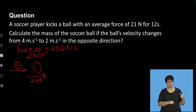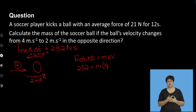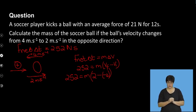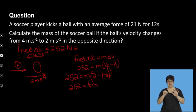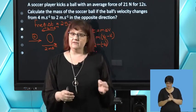They want mass, so we use F net delta T equals M delta V. I know F net delta T is 252. I don't know the mass, and velocity: VF minus VI is 2 minus (−4). So 252 equals M times 6, meaning 252 equals 6M. At this point I know I'm going to get a positive answer for mass — I have to get a positive answer. If you end up with a negative answer, you've made a mistake.